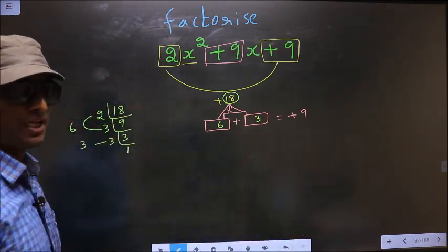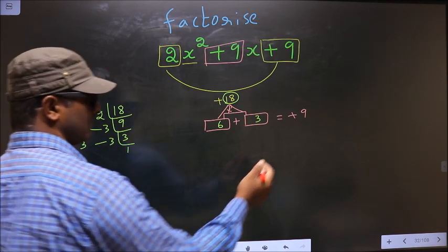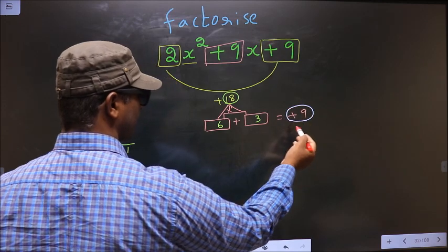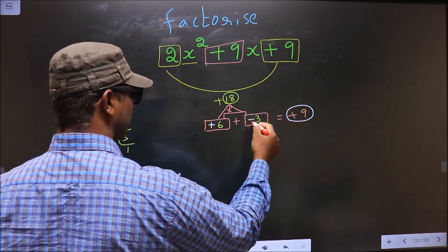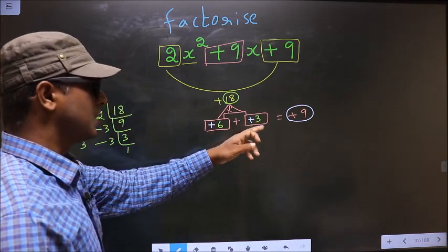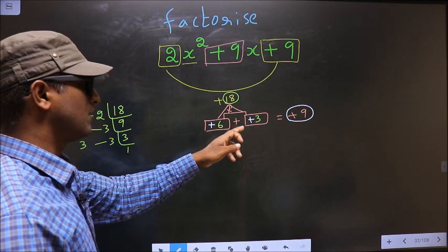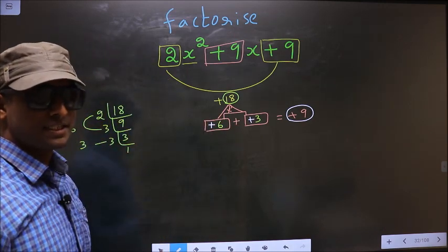Now we should adjust the signs. What I mean is we should get here +9. For that I should put + before 6 and also before 3. +6 plus 3 is +9, +6 into +3 is +18. So we have adjusted the signs.